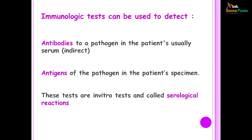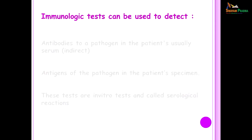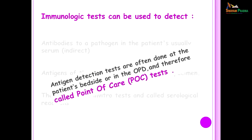Immunological tests can be used to detect antibodies to a pathogen in the patient's serum, and this comes under indirect tests. Antigens of the pathogen in the specimen indicate a direct test, and these tests when they are conducted in vitro are called serological tests. Nowadays, we have antigen detection tests which can be performed at the patient's bedside and these tests are referred to as point of care tests because the results are available immediately.